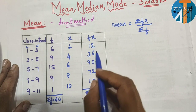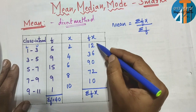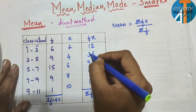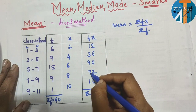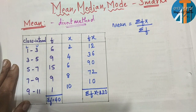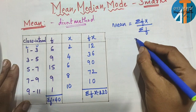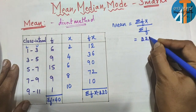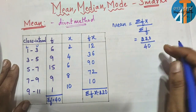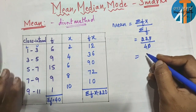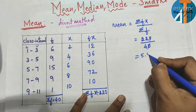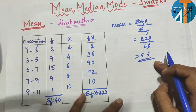Adding the fx values: 2+6+2=10, 10+2=12... continuing, we get σfx = 220. Now substituting: mean = 220 / 40. Cancel the zeros: 22/4. 4×5=20, remainder 2, so 2/4 = 0.5. Therefore mean = 5.5.